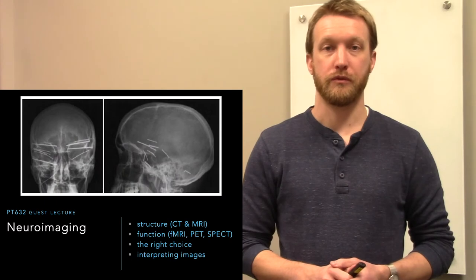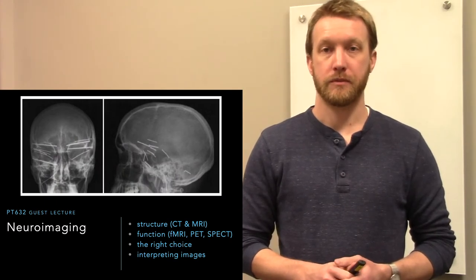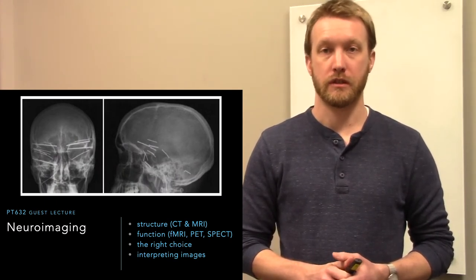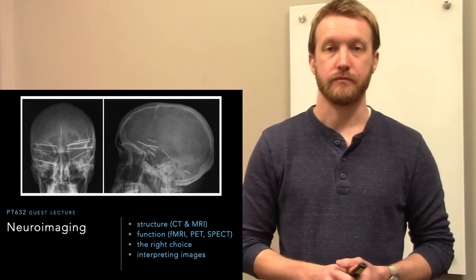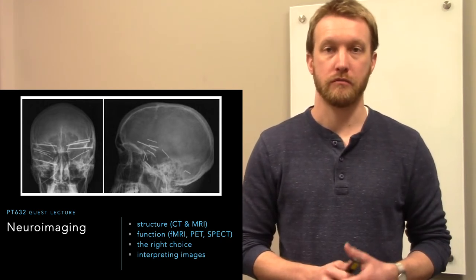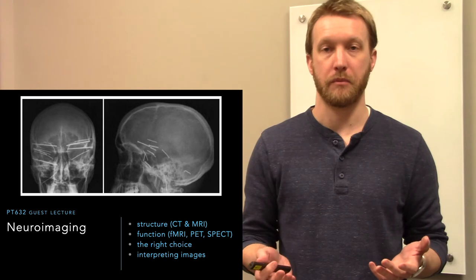In this video, we'll review a few different types of imaging modalities used to look at the nervous system. For the most part, we're choosing between CT scans and MRI.